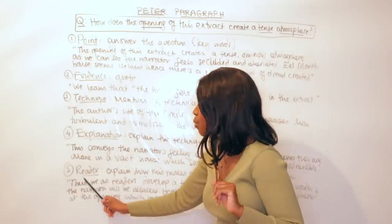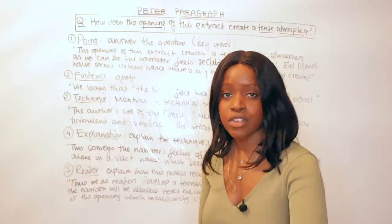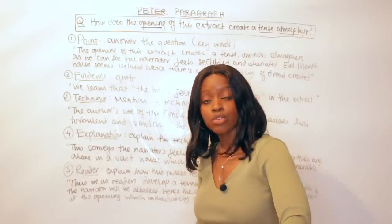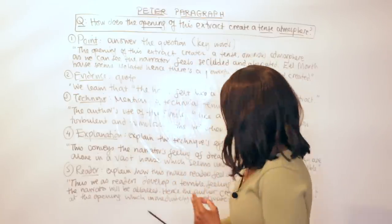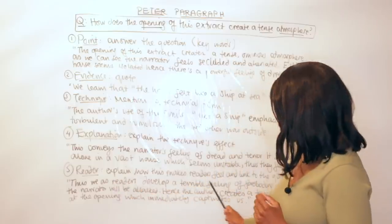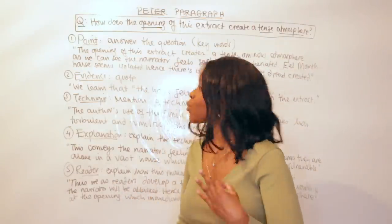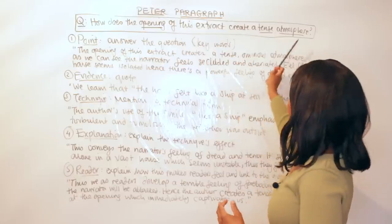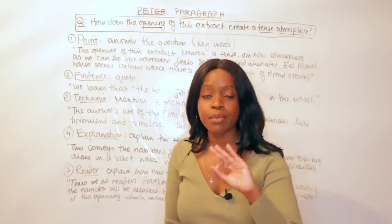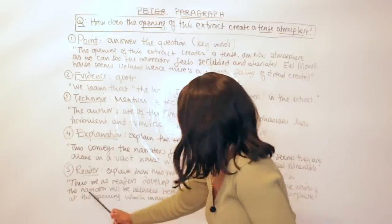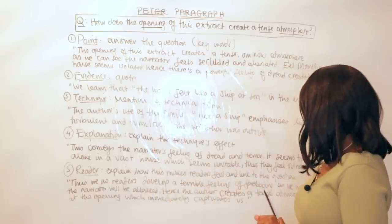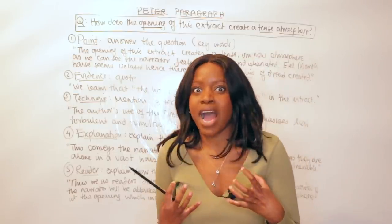Of course, if it's a play you're talking about, you need to talk about the audience. So as I mentioned, in the Reader bit, you have to explain how this makes us as readers feel and link it back to the question—the keywords in the question, of course, being 'opening,' 'tense,' and 'atmosphere.' So I'm going to read my Reader part now: Thus we as readers develop a terrible feeling of foreboding—foreboding means like a really bad feeling that something terrible is going to happen.